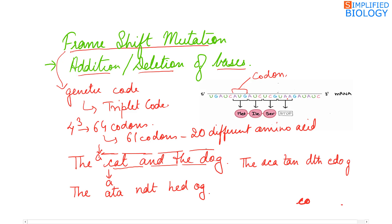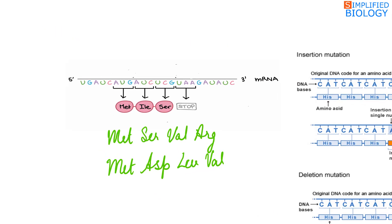In the genetic code on messenger RNA: the first codon is AUG (methionine), second AUC (isoleucine), third UCG (serine), and UAA is the stop codon. Now if the base A is deleted, the first codon remains AUG for methionine, but the second becomes UCU (serine), third becomes CGU (valine), and fourth becomes AAG (arginine). The original polypeptide is not formed; instead, a different polypeptide sequence is produced.